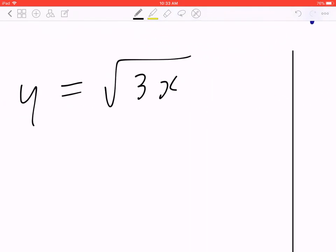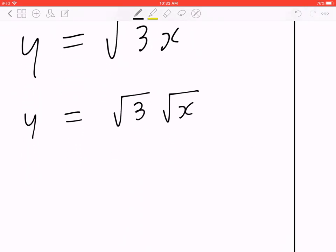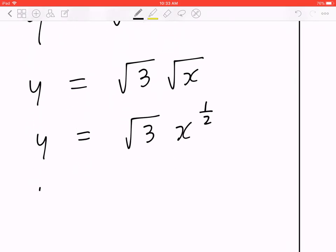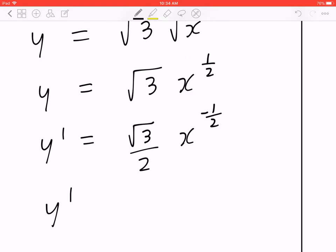The first approach is you can rewrite this in terms of the square root of 3 times the square root of x. And of course, y equals the square root of 3 times x to the power of half. Now when you find y prime, you take the exponent, half, and you multiply it to root 3 from the front. That's going to be root 3 divided by 2 times x to the power of half minus 1, which is negative half, which means y prime equals root 3 divided by 2 times the square root of x.